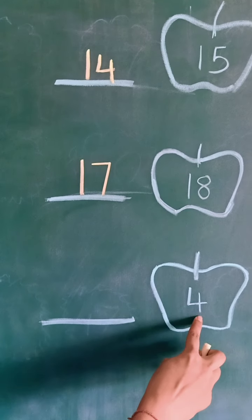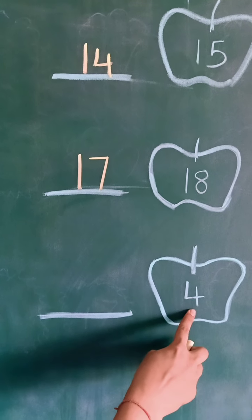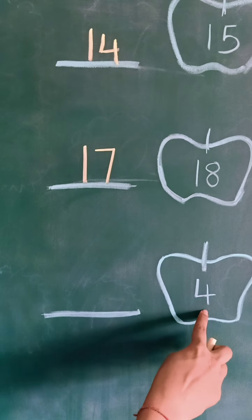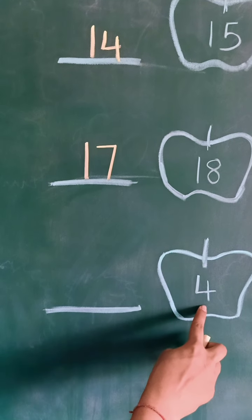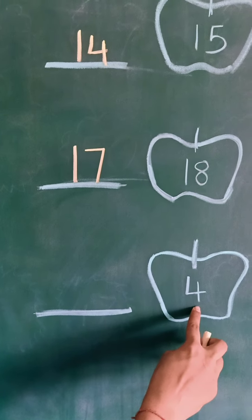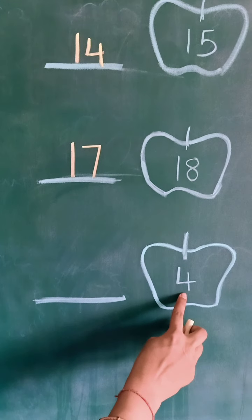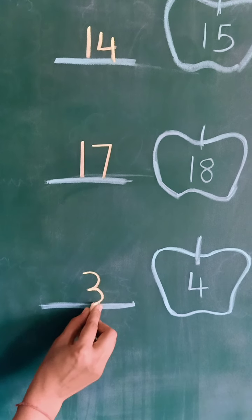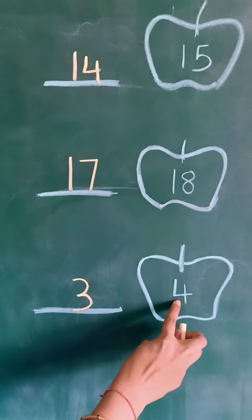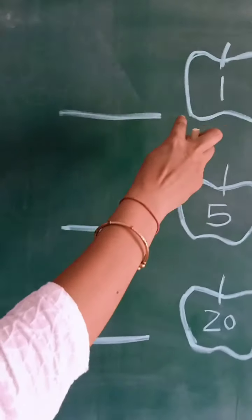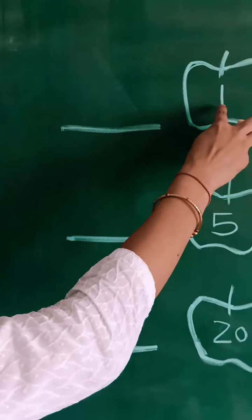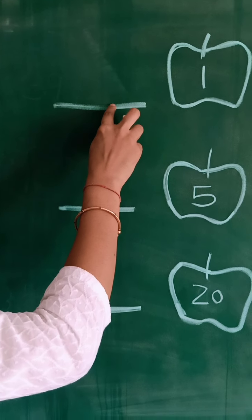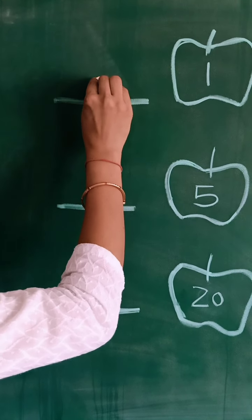Number 4. Next number is number 4. Speak 1 to 4 numbers: 1, 2, 3, 4. Which number we speak before 4? Number 3. Number 1 — which number comes before 1? You guess. Number 0.